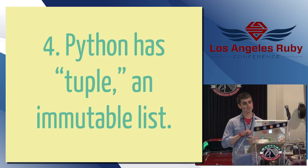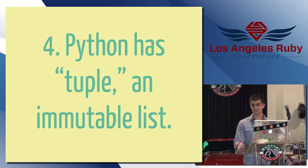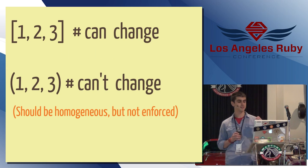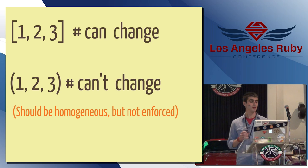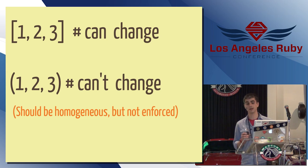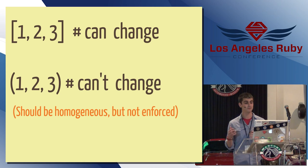Number four, Python has something called tuple, which is an immutable list. I don't particularly like this personally, but basically if you have the square brackets, that's a list in Python. You can change it. It's just like an array in Ruby, but if you use parens, that's a tuple, and it can't change. If you try to change the list, you'll get an error. A convention in Python is that tuples should be homogeneous. Each element should be the same type of object, but that isn't really enforced. You don't get an error, so it's kind of a non-issue.